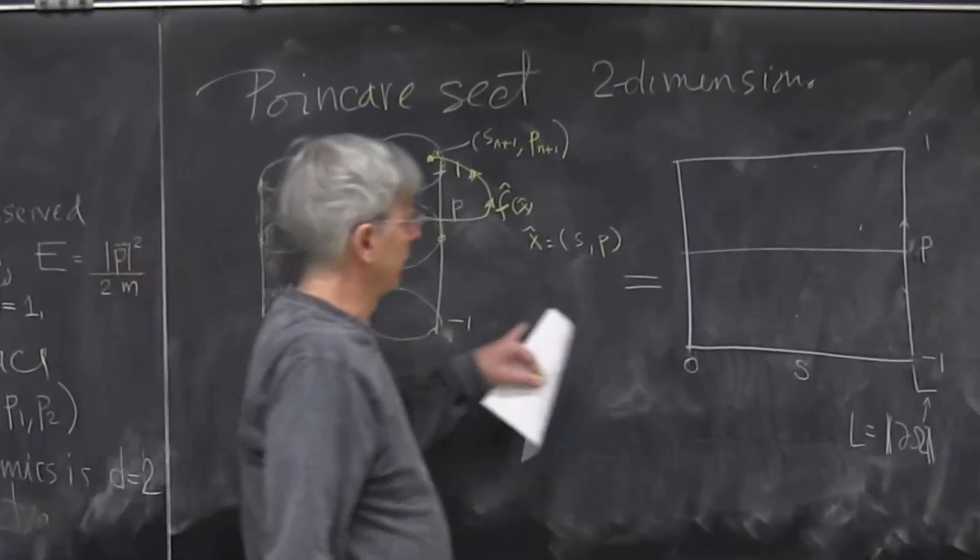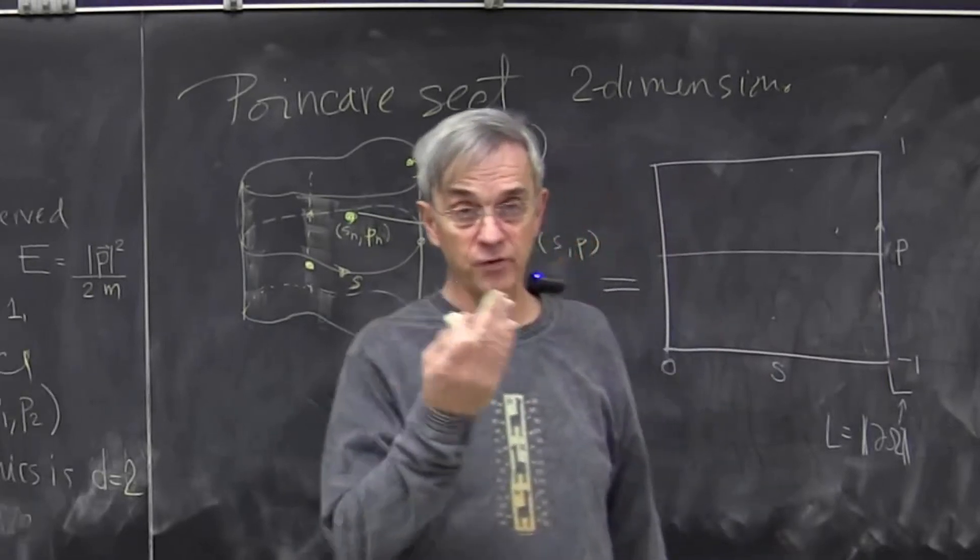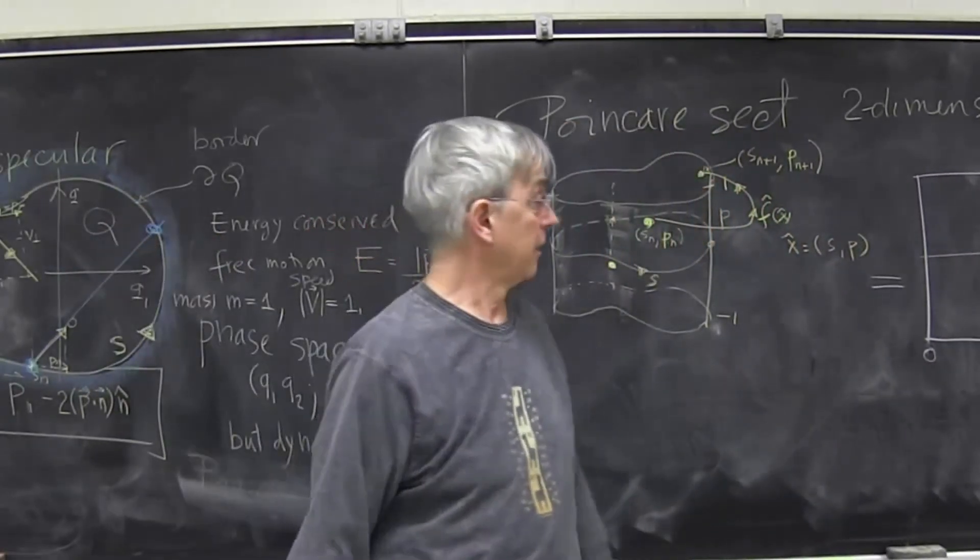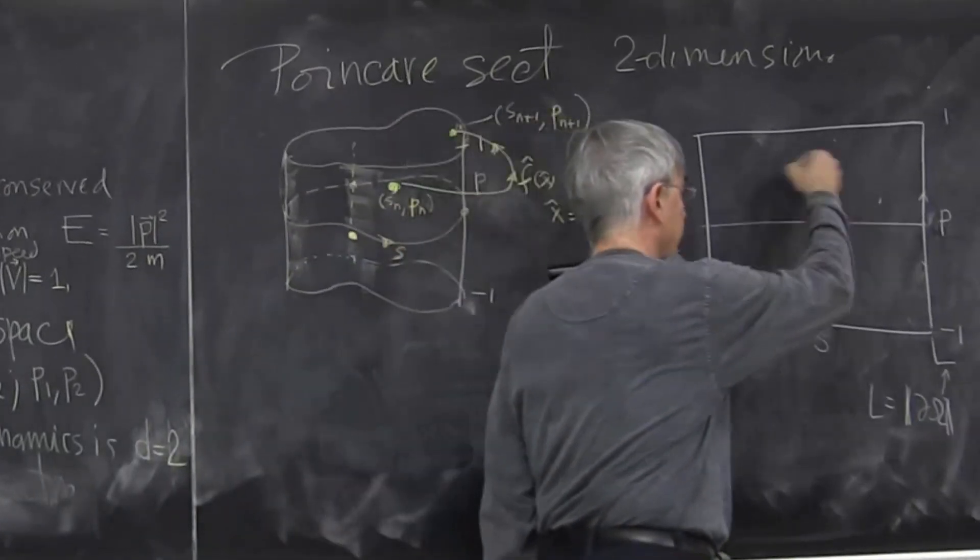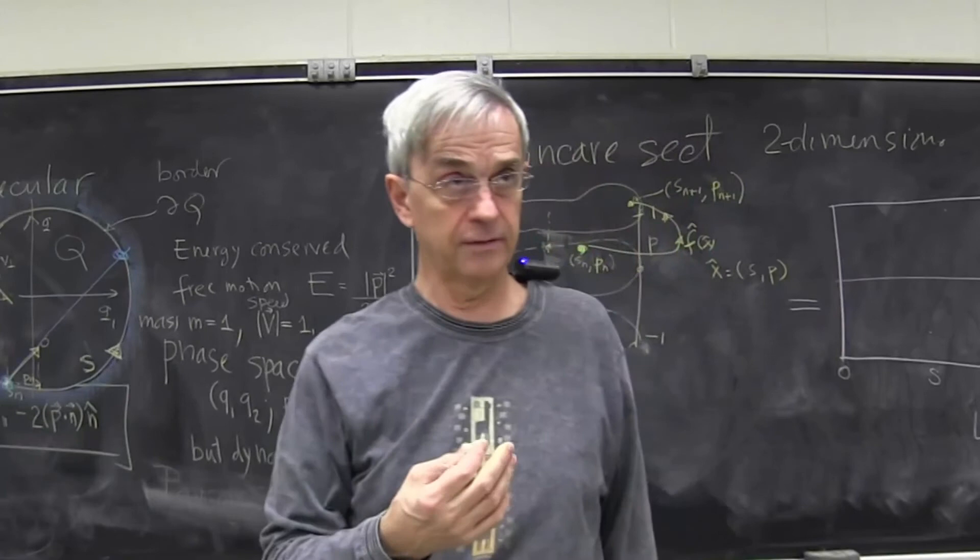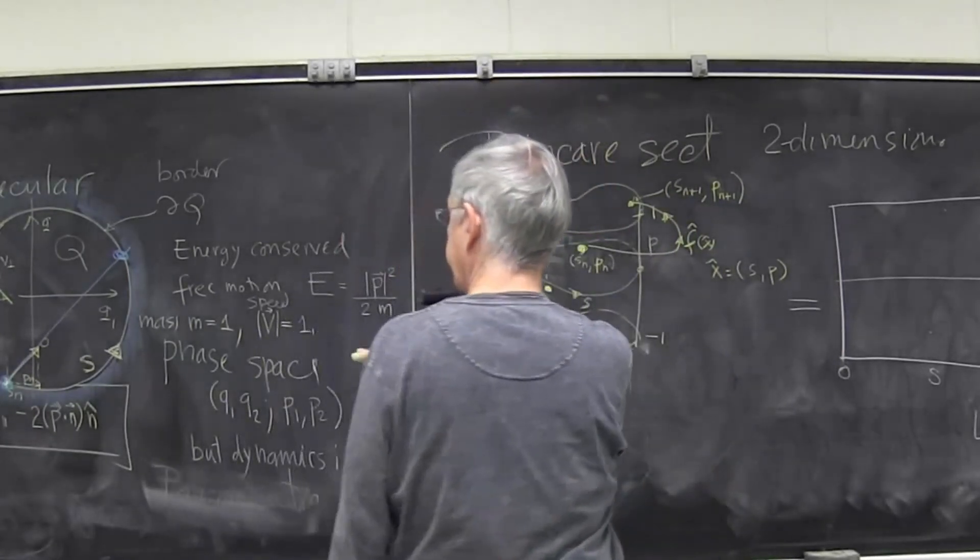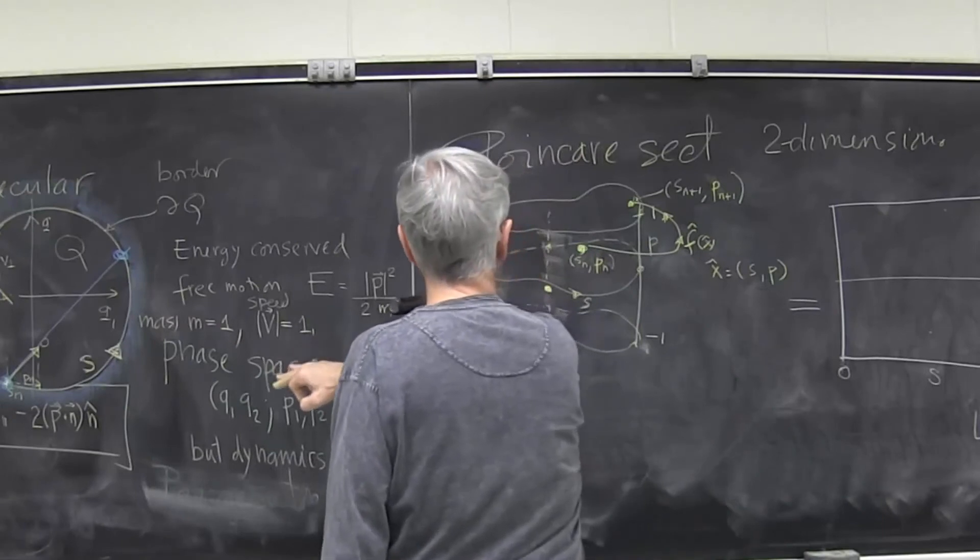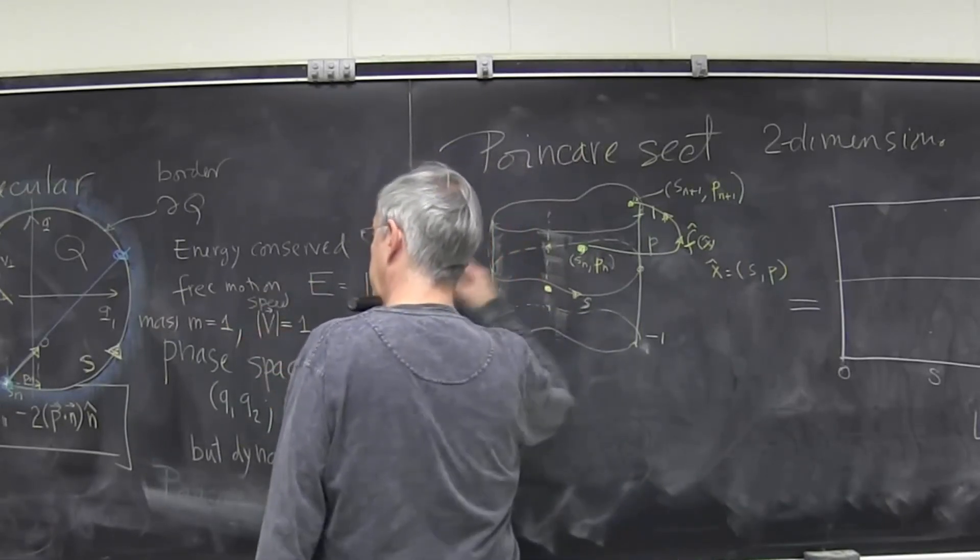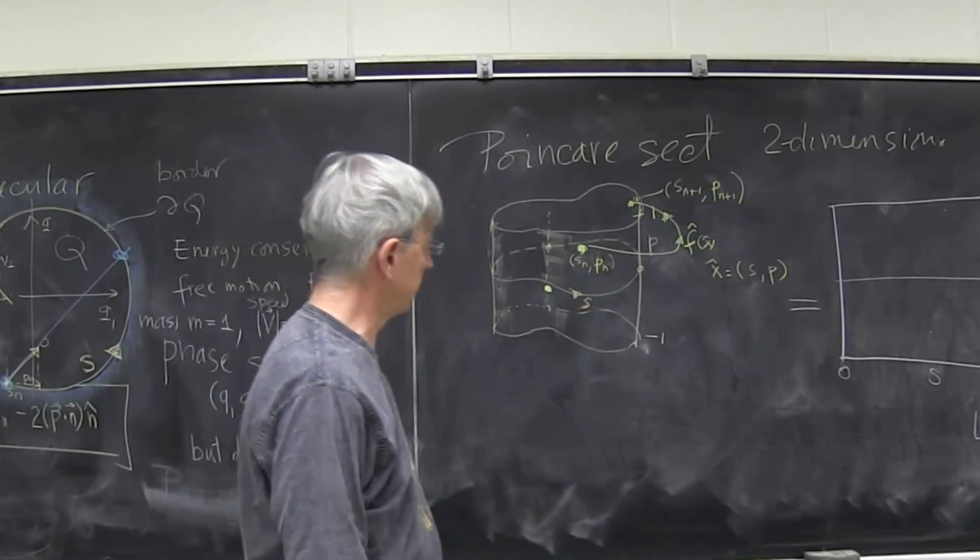Now, when you do it on Poincare section, you will be only studying transverse motion of the billiard, something that you can visualize here. And you will see stable, unstable manifolds. Your Jacobians will give you lots of information, and you will actually see what's going on. So, going from this representation, which is very intuitive if you play pool, to a Poincare section representation, will turn out to be very powerful.